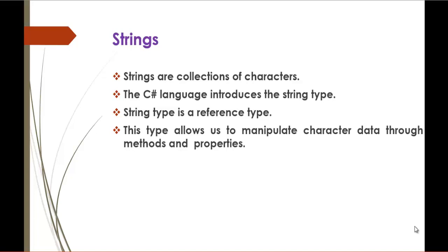What do we mean by reference type? It means that string does not store its value directly. If you create a string variable and store a value to it, it does not store the value directly. Instead, it stores the address where the value is being stored. For example, if you store the sentence 'hello world' in a variable, string does not store 'hello world' directly — it stores the address where 'hello world' is being stored. Using string also allows you to manipulate the character data through methods and properties, meaning strings have certain properties and methods which allow us to manipulate whatever value we store in the string.